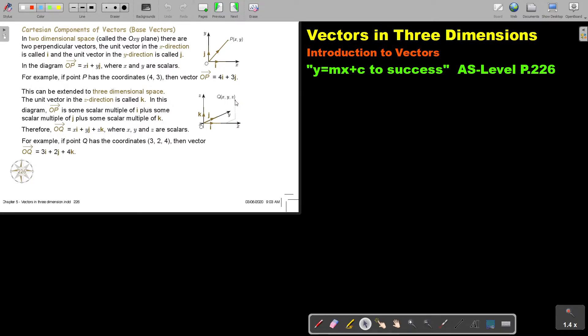Therefore, OQ is XI plus YJ plus ZK, where X, Y and Z are scalars. For example, if point Q has coordinate 3, 2, 4, then vector OQ is 3I plus 2J plus 4K.